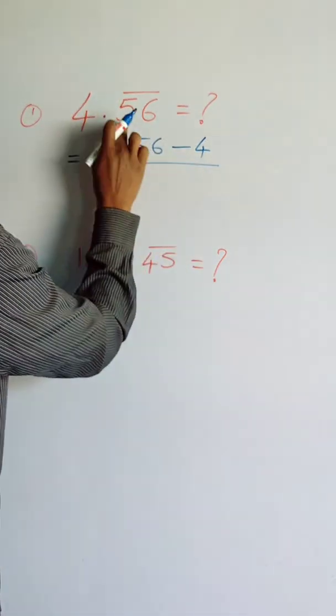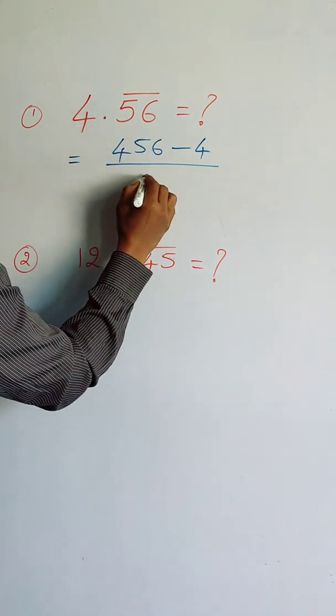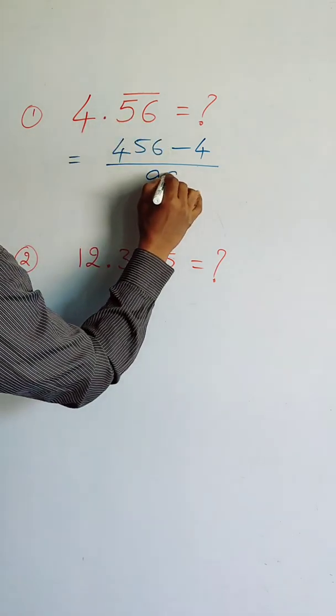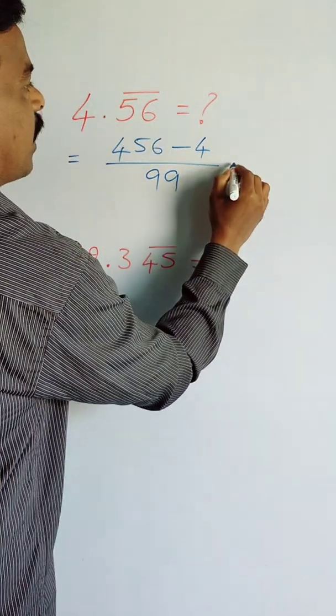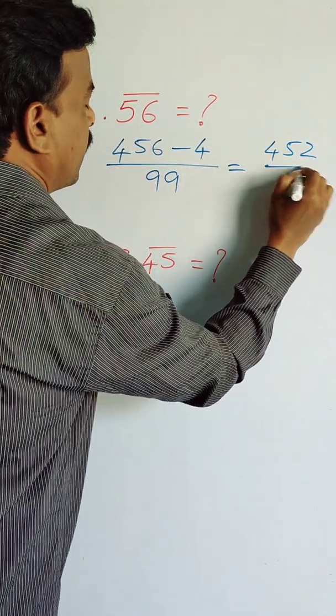Bar digits divided by... how many digits are there? Two digits. So by two digits, two nines you keep, and it is equal to 456 minus 4, 452 by 99.